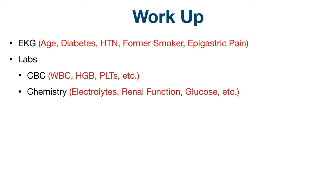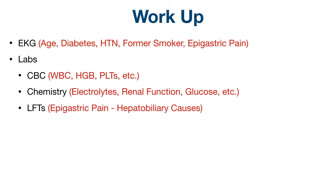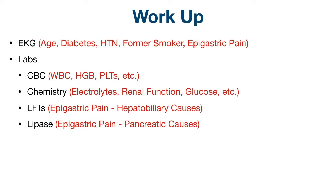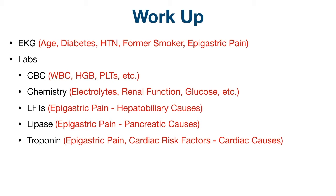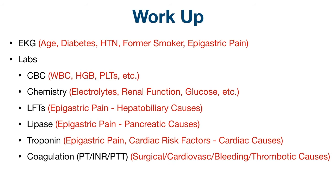A chemistry should also be ordered, especially with his abdominal pain and history of diabetes — this will contain electrolytes, renal function, and glucose. Given his epigastric pain, you should consider a liver function test to look at hepatobiliary causes, or a lipase to assess the pancreas such as pancreatitis. Cardiac etiology should be considered given his risk factors and epigastric pain, so troponin should be ordered. Finally, you can consider coagulation studies, especially if the patient requires procedures, anticoagulation, or reversal of bleeding for any reason.